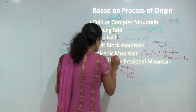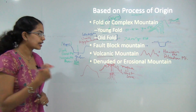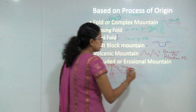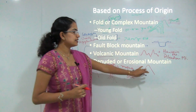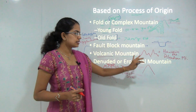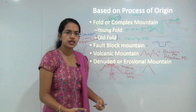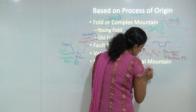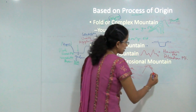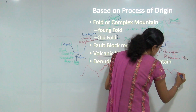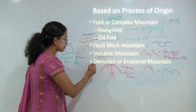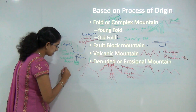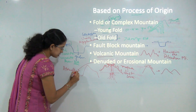Finally, once a mountain has significantly formed and reached its peak, the process of denudation or erosion becomes prominent. This results in the washing away of the top of the mountain and ultimately a reduction in height. We call these denuded mountains. A classic example would be the Aravalli mountain ranges in Rajasthan, India.